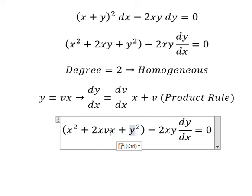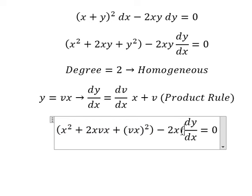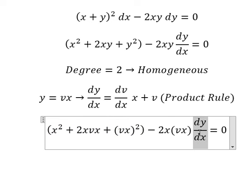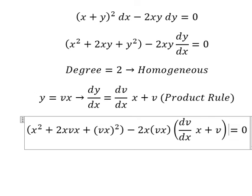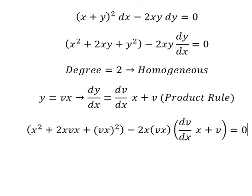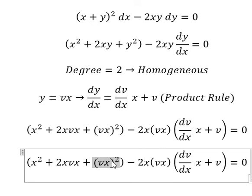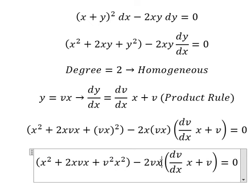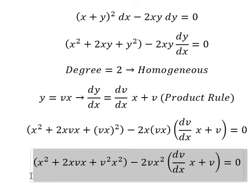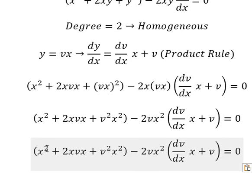Now I will substitute this in to change y. Similarly for the other terms, we change them using the substitution. This gives us v squared x squared and vx squared. Next, we simplify x squared from both sides.